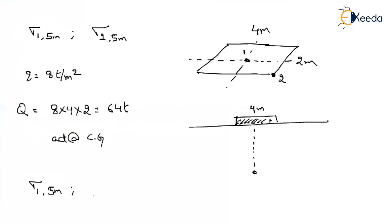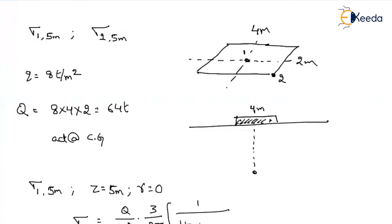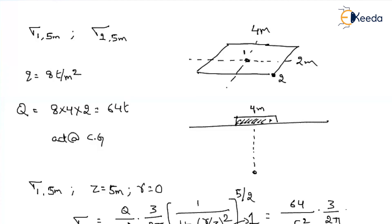For stress at point 1 directly below the CG at 5m depth: Q is 64 tons, Z is 5m, and R is zero since both the load and the stress point are at the CG. The Boussinesq formula is σ = (Q/Z²) × (3/2π) × [1 / (1 + (R/Z)²)^(5/2)]. When R equals zero, the term simplifies to 1, giving σ = 64/25 × 3/(2π), which equals approximately 1.22 tons per m².